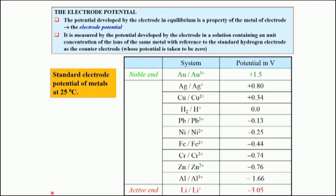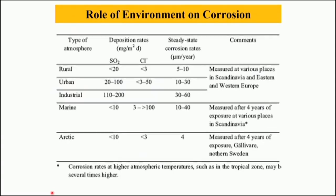The standard EMF series acts as a guideline for choice of materials for different applications, giving information about how noble or active a metal is and how prone it is to corrosion. In this series, gold is at the top and magnesium, zinc, and aluminum are at the bottom, with lithium at the very end. This is an ideal series giving approximate information about relative corrosiveness under standard conditions — 25°C and normal pressure. However, actual corrosion rate varies and depends on the kind of environment and material composition.